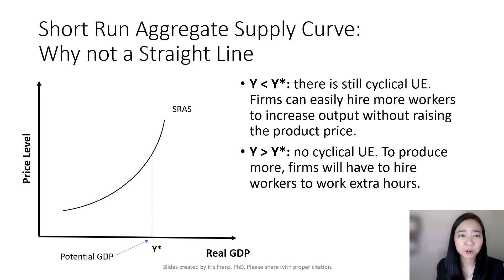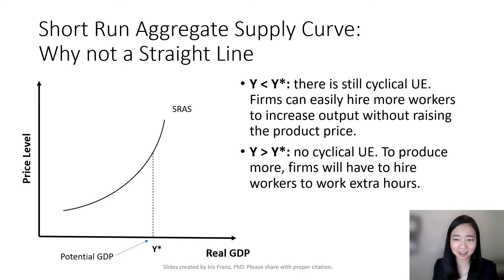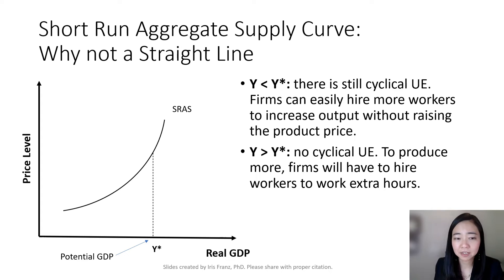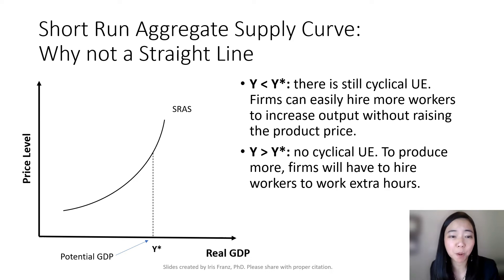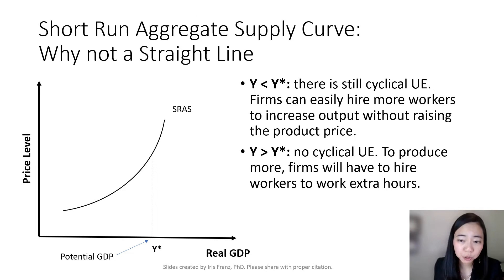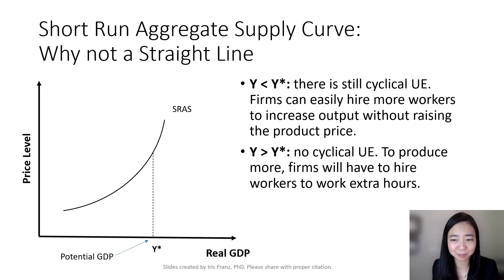Notice that our short run aggregate supply curve is not a straight line. In particular, before we reach the potential GDP, our short run aggregate supply curve is relatively flat. After we reach our potential GDP, our short run aggregate supply curve is relatively steep.